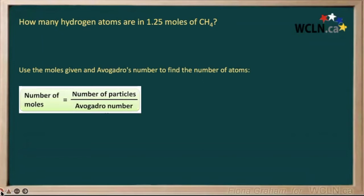Here's our handy-dandy formula: number of moles equals number of particles divided by Avogadro's number. We can use this formula to calculate the number of particles by simply multiplying our number of moles by Avogadro's number.